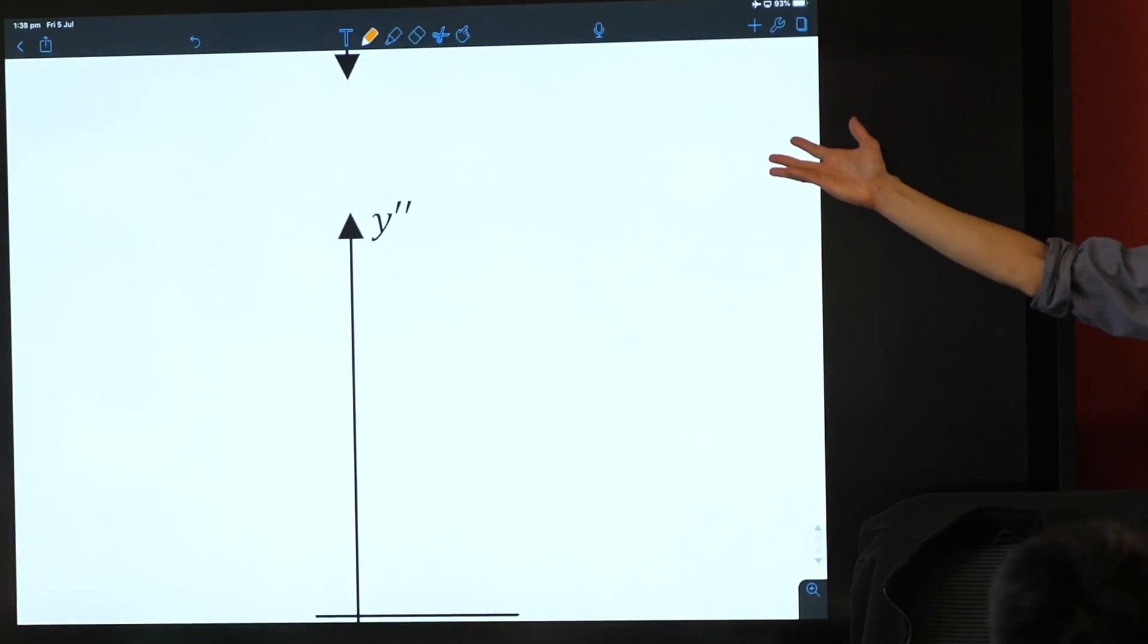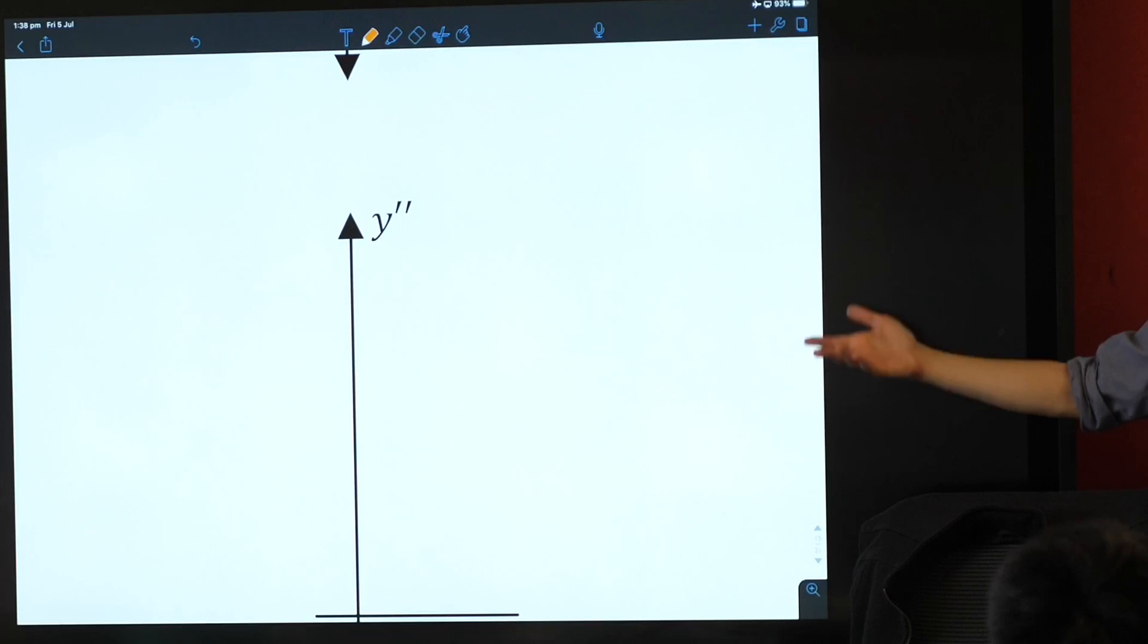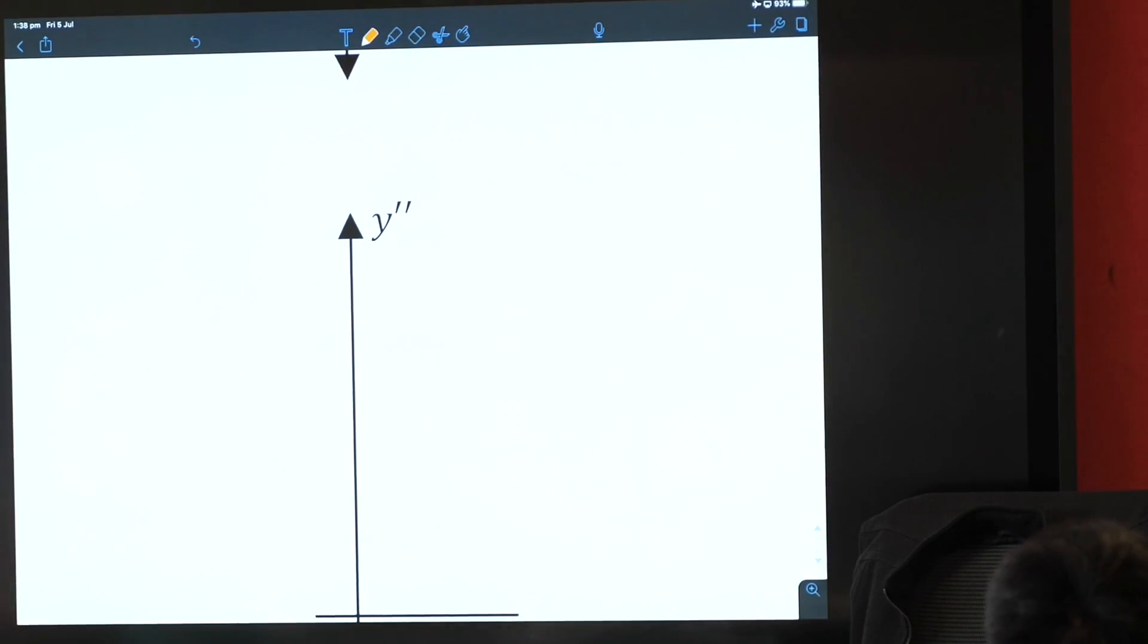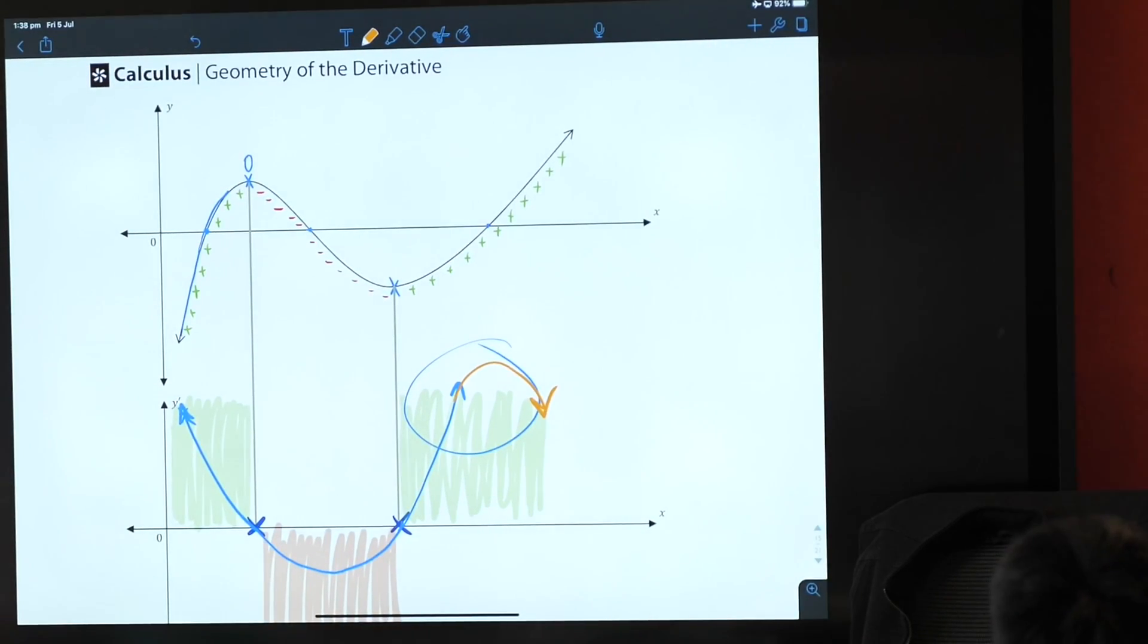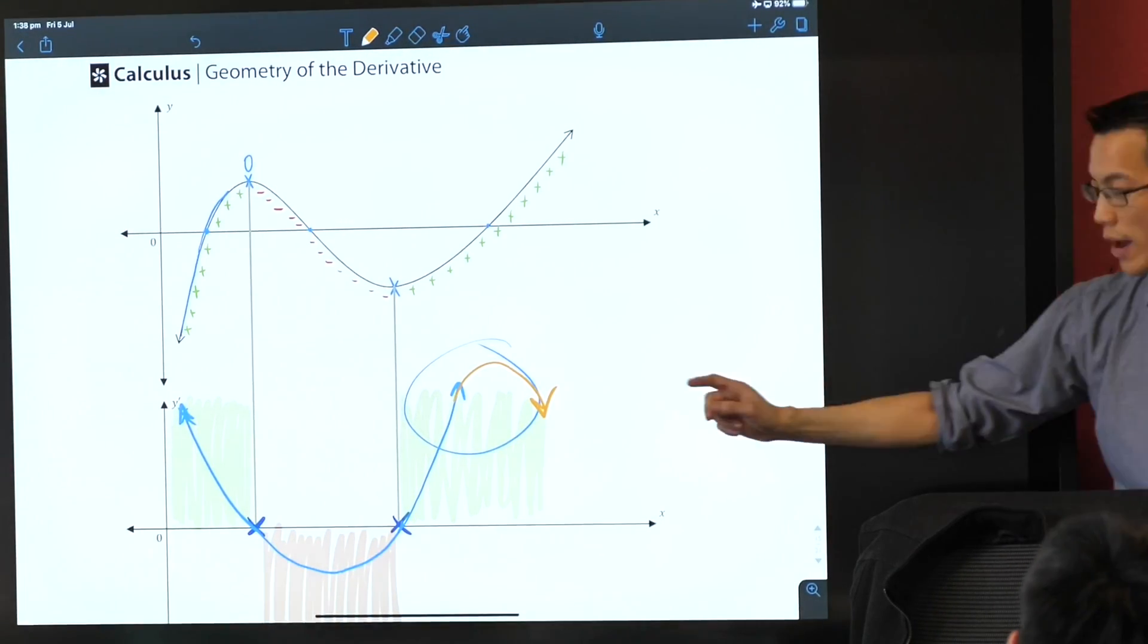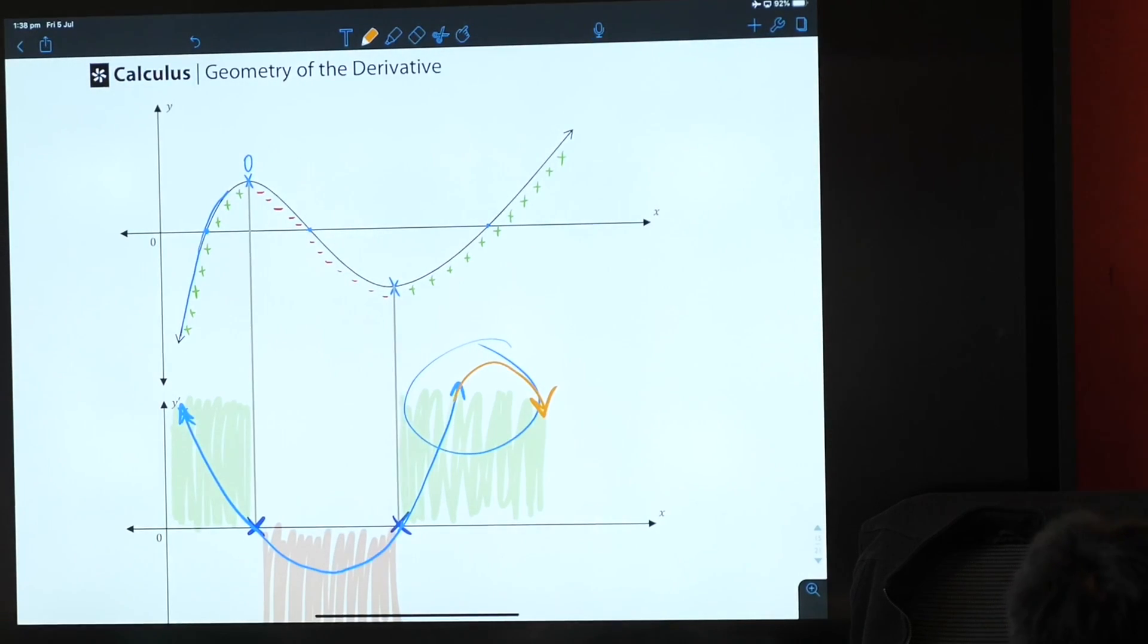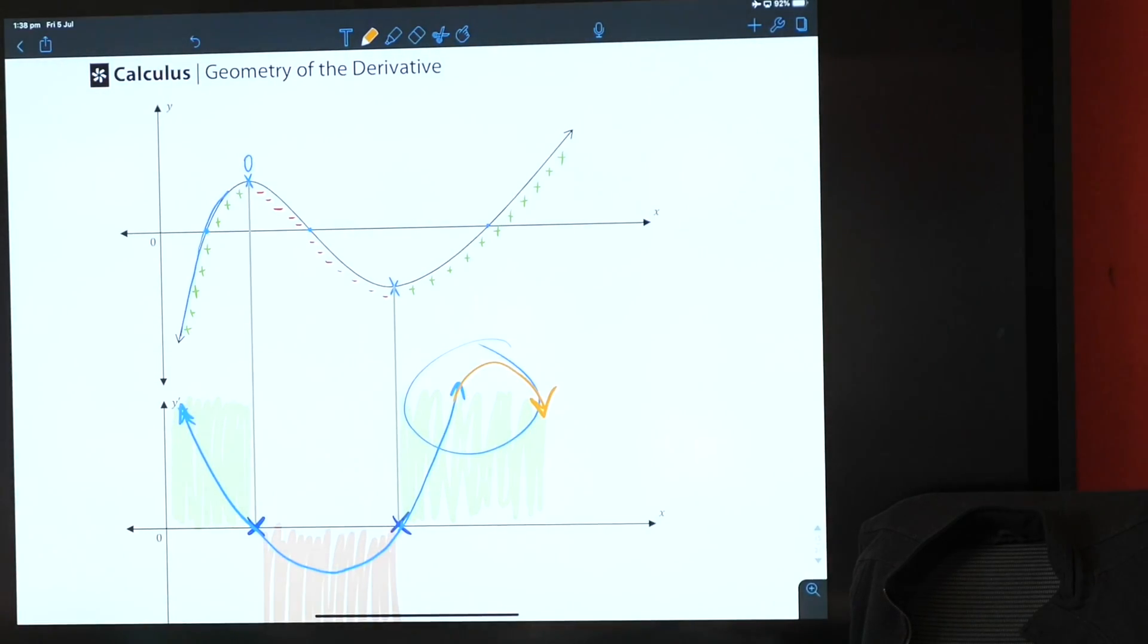You should do it again, right? I want you to, I'm not going to hold your hand at all, right? Take that middle graph, think about it in exactly the same way that we looked at the top graph. Put your pluses, your minuses, work out where your most important values are. See if you can come up with that bottom derivative. Off you go.